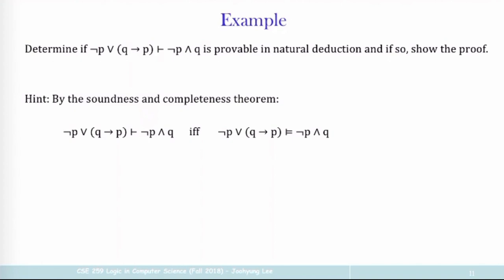In other words, these two statements are the same thing. Soundness and completeness theorem is saying: this can be derived if and only if this. But that's also the same as saying if it's not derivable then entailment also does not hold. Sometimes you want to use the positive version of this theorem, sometimes you want to use the negative version — it depends on how you proceed.